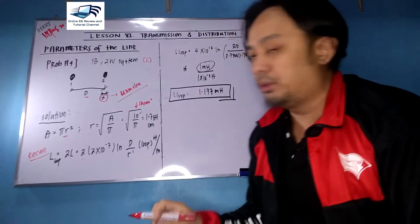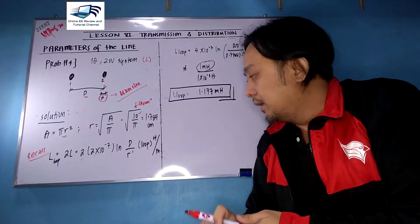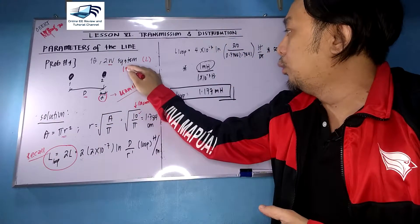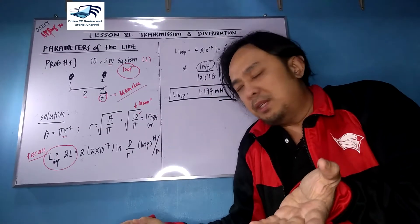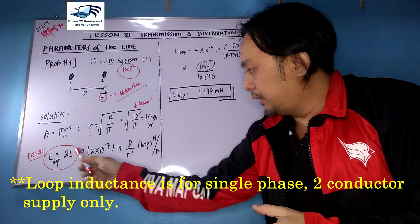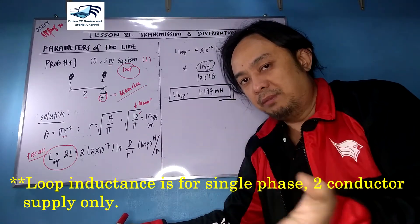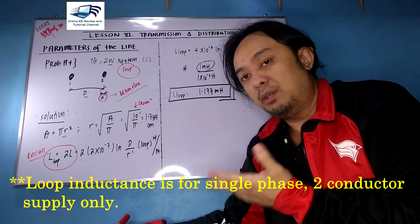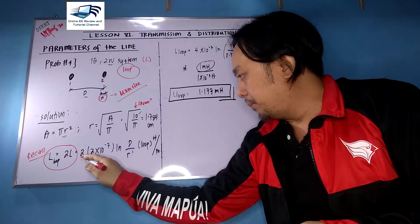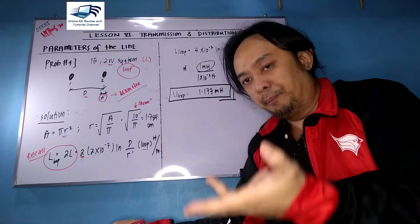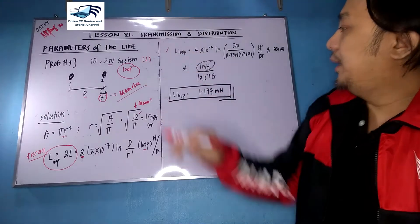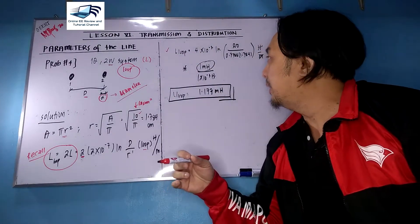Recalling from previous discussions, the loop inductance for a single-phase two-wire system is L_loop equals 2 times L. Here, L is 2 times 10⁻⁷ times the natural log of D over r-prime, or D over r-prime for a single-phase two-wire loop. So we multiply by 2, and our unit will be in henry per meter for the loop.